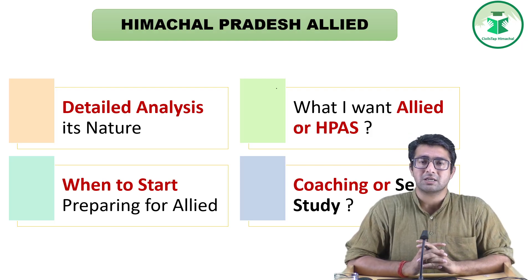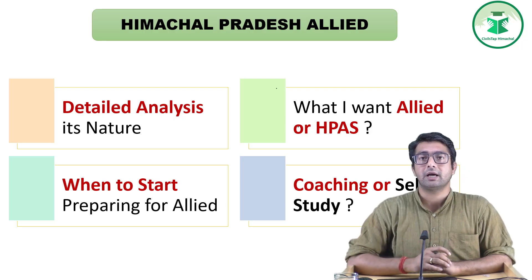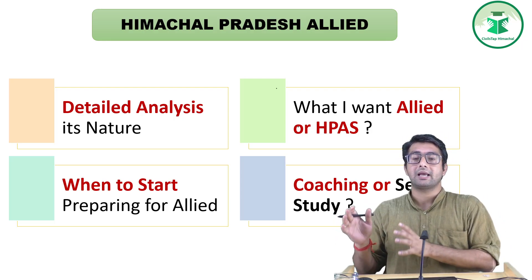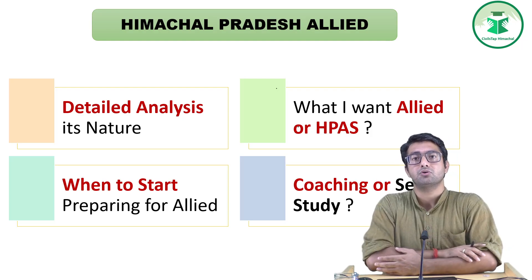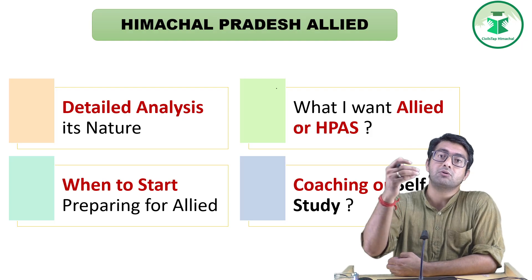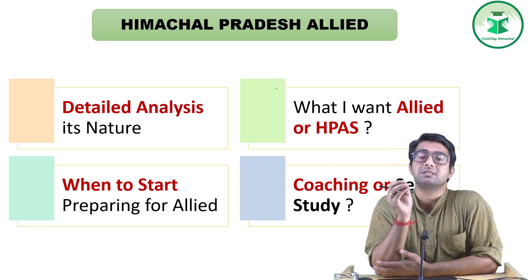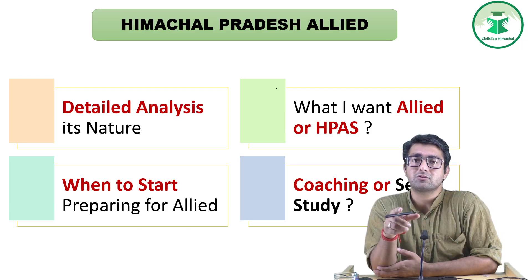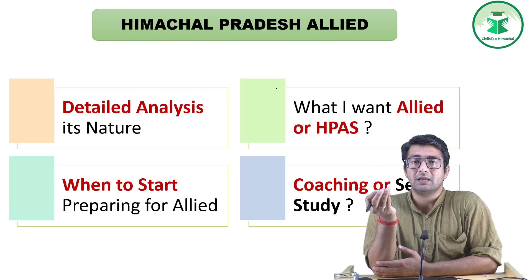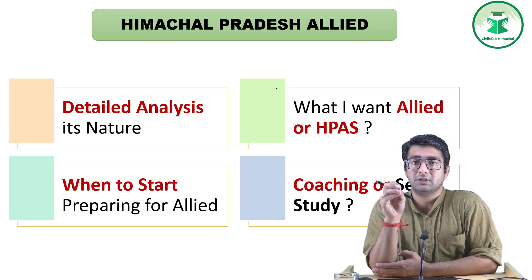Regarding difficulty level — this is a competitive examination. Approximately 45,000 to 50,000 people fill the application form. In the last year around 110 students got jobs. The commission said that they will call 20 times the number of vacancies for the mains stage.